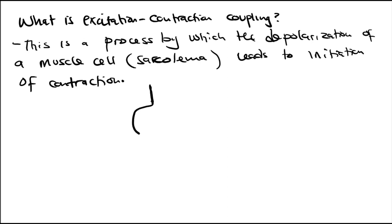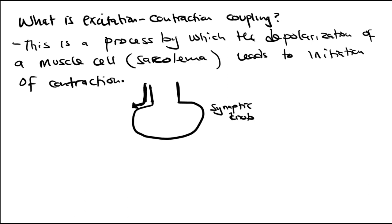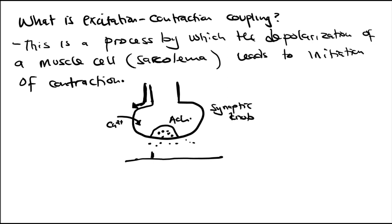Let's revise the transmission across the neuromuscular junction. If this is our synaptic knob, when an action potential propagates down the synaptic knob, voltage-gated calcium channels open, causing calcium entry and release of the neurotransmitter acetylcholine into the synaptic cleft. Acetylcholine then attaches to nicotinic receptors on the surface of the motor end plate.